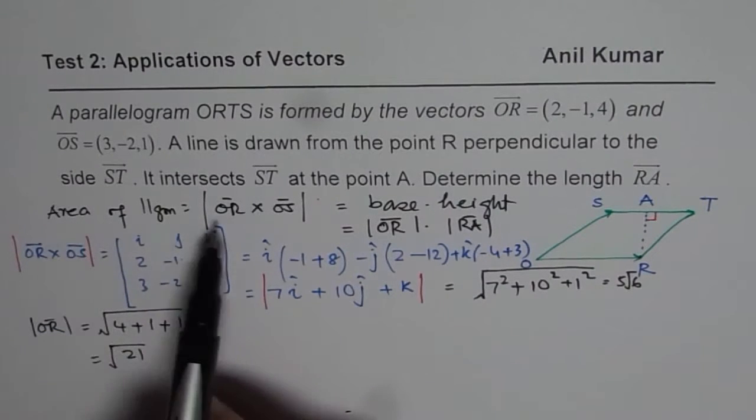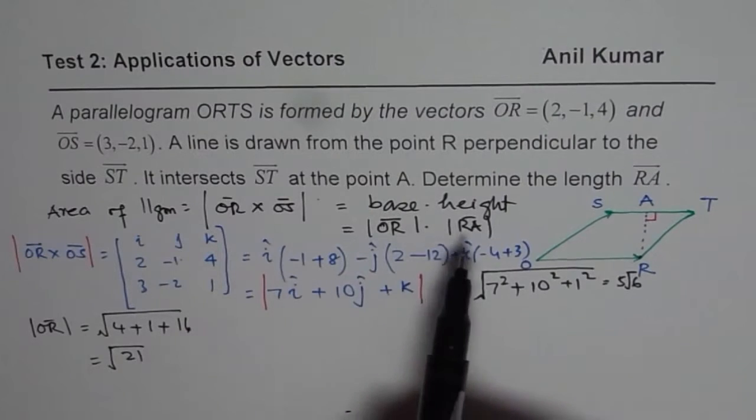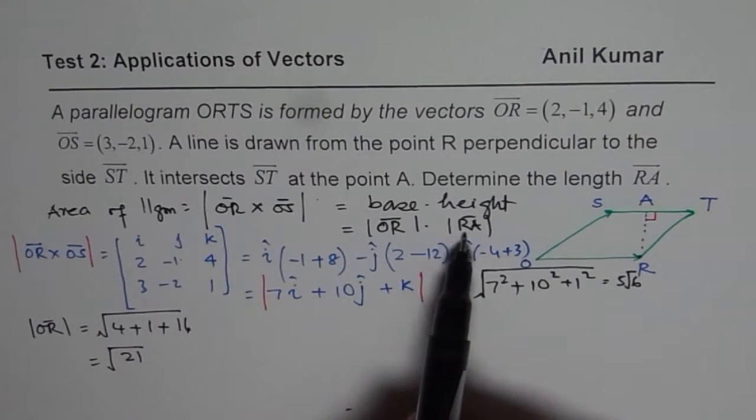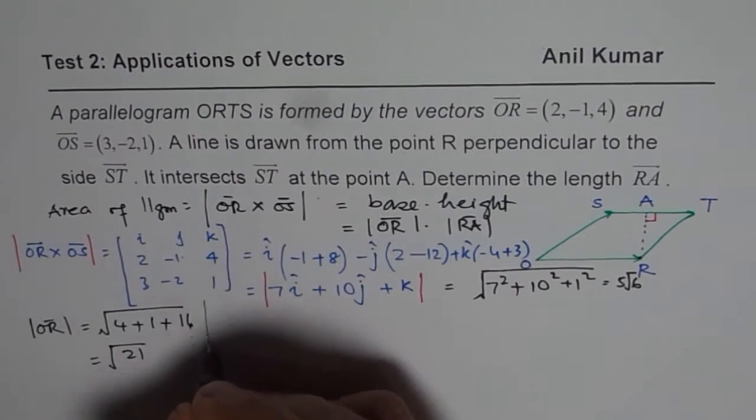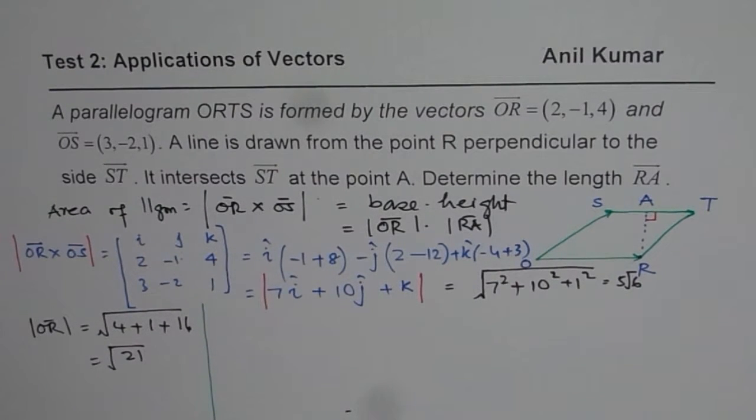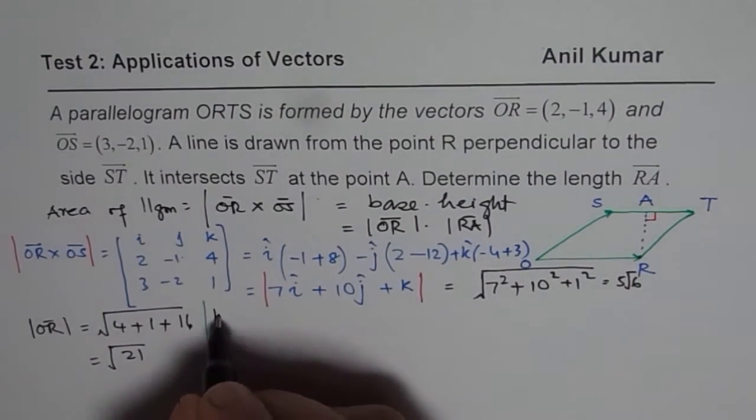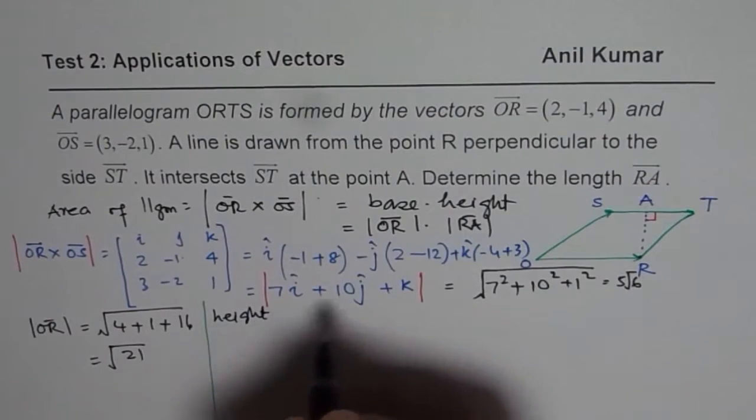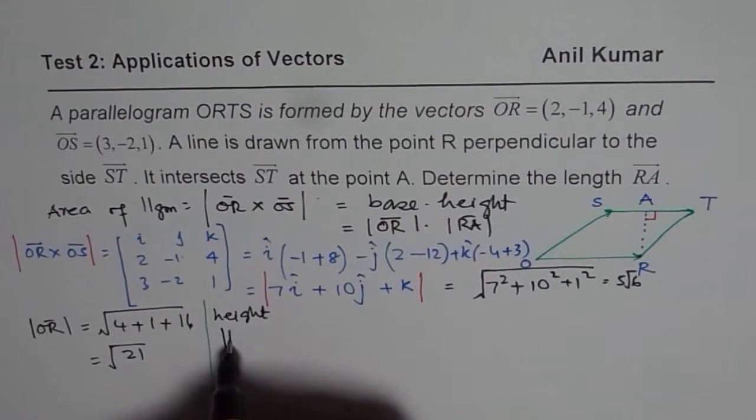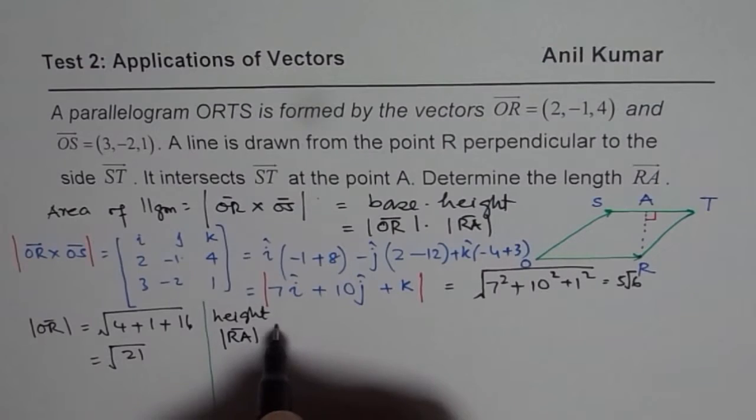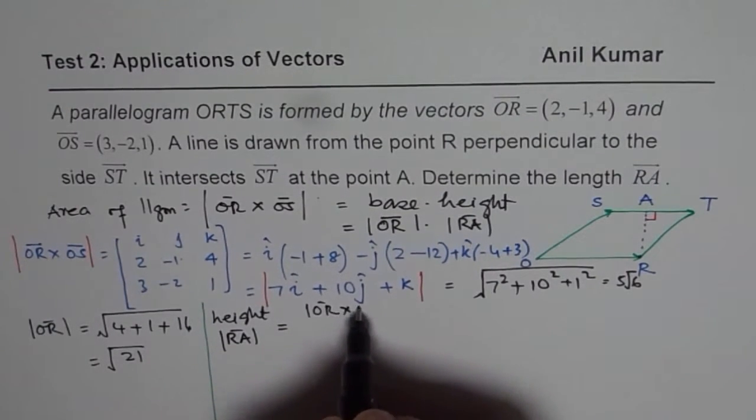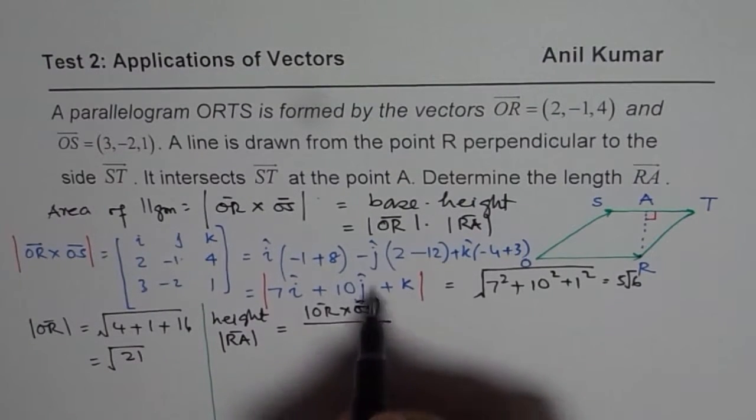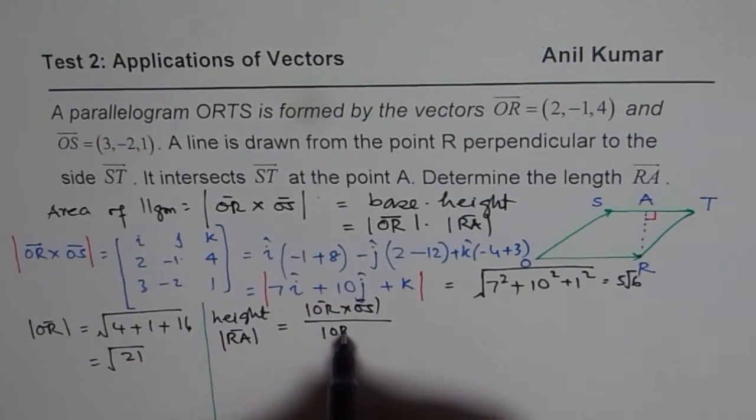So we know cross product is base times height. That means the height RA will be cross product divided by the magnitude here. So from here we can say that the height, which is, let me use blackening. So height is the magnitude RA. So magnitude RA will be equal to the cross product. So which is cross product OR times OS divided by the magnitude of OR.